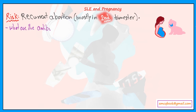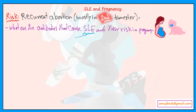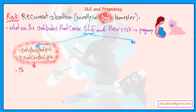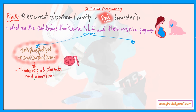What are the antibodies that cause SLE risks in pregnancy? We have two categories. The first is antiphospholipid and anticardiolipin antibodies. These two antibodies lead to thrombosis of the placenta and cause abortion due to ischemia.